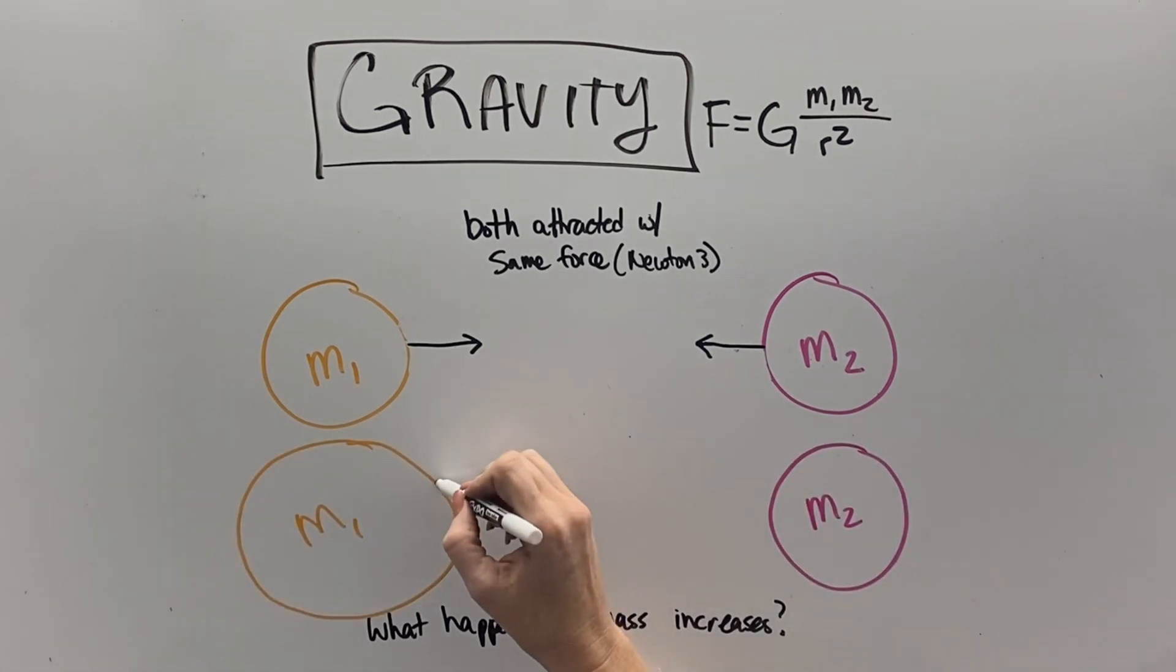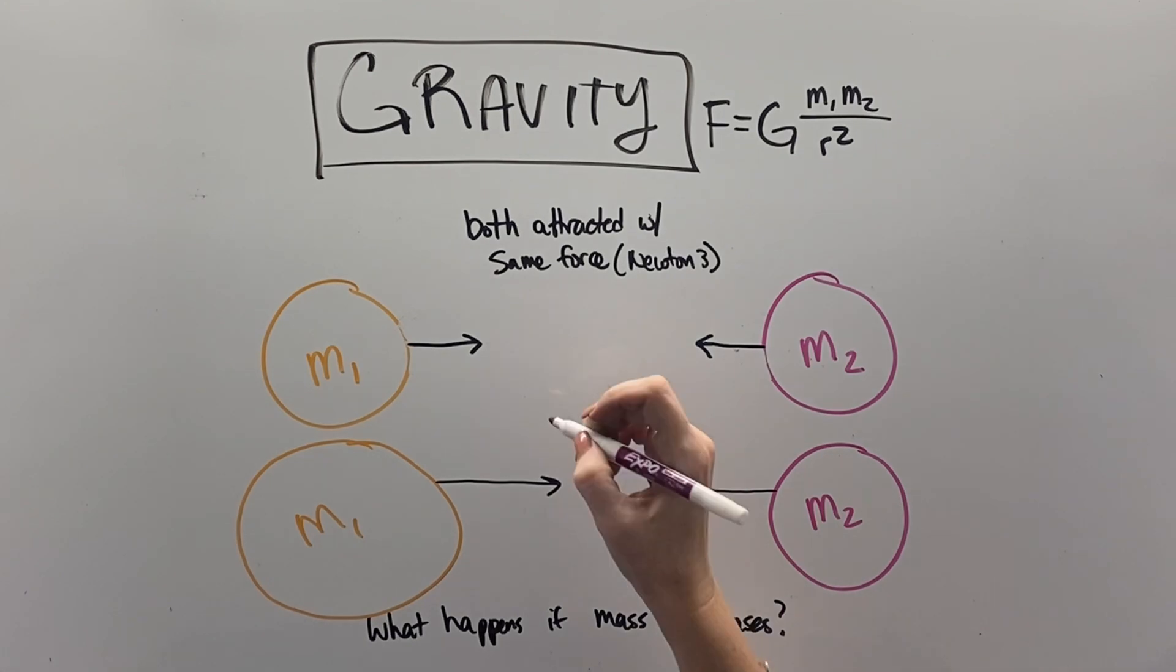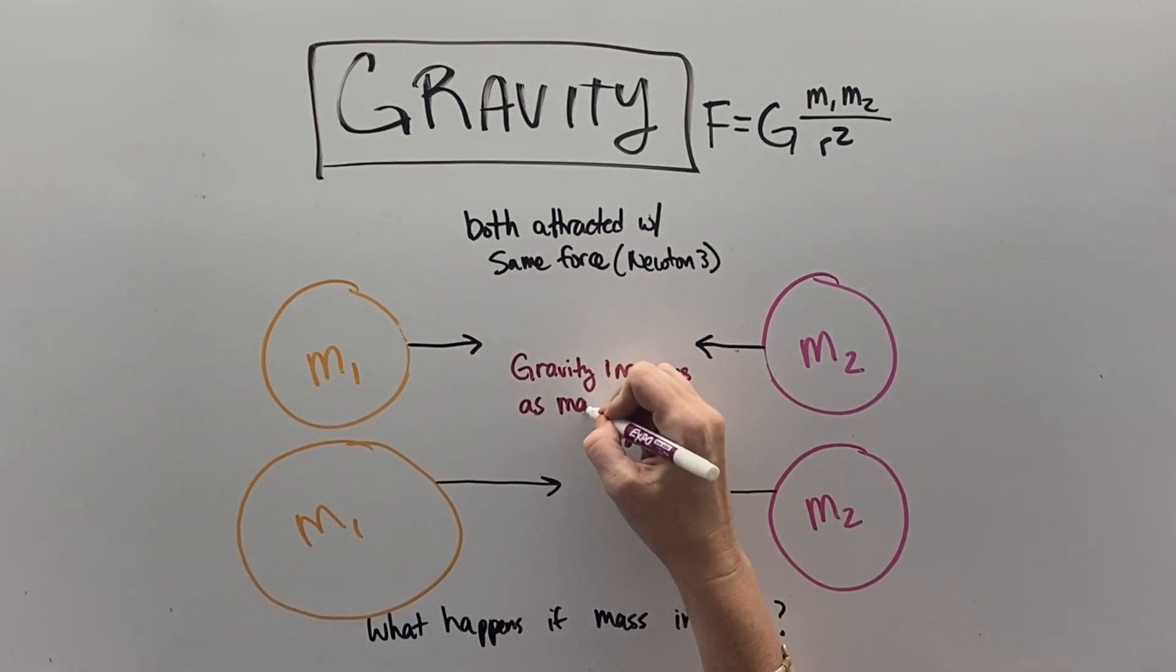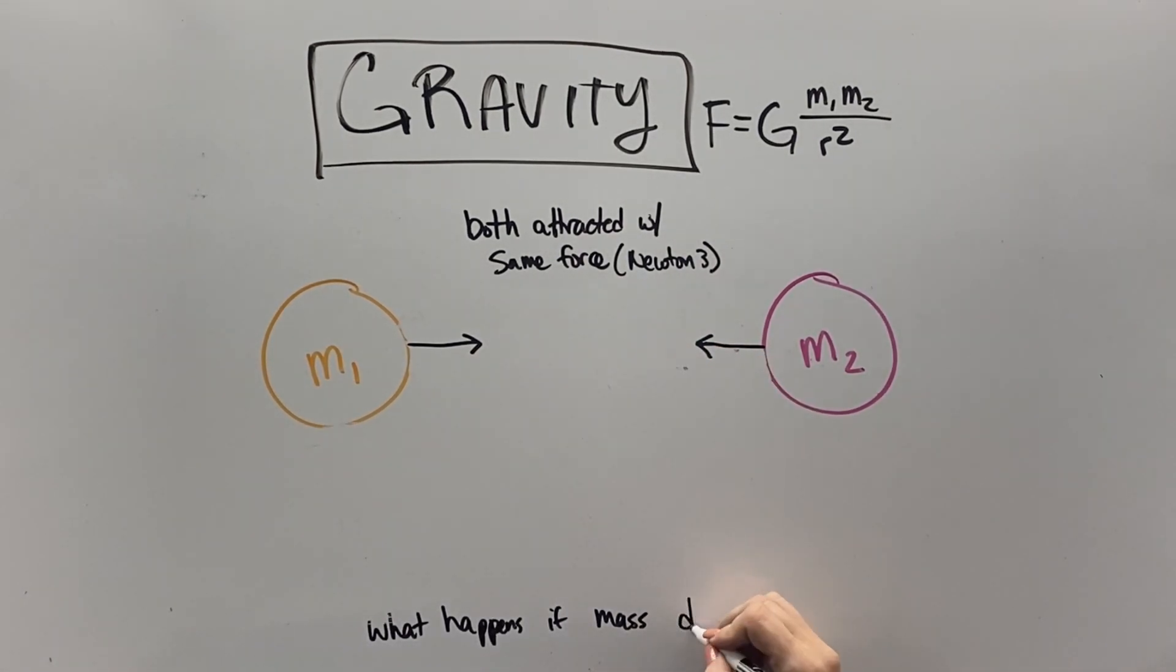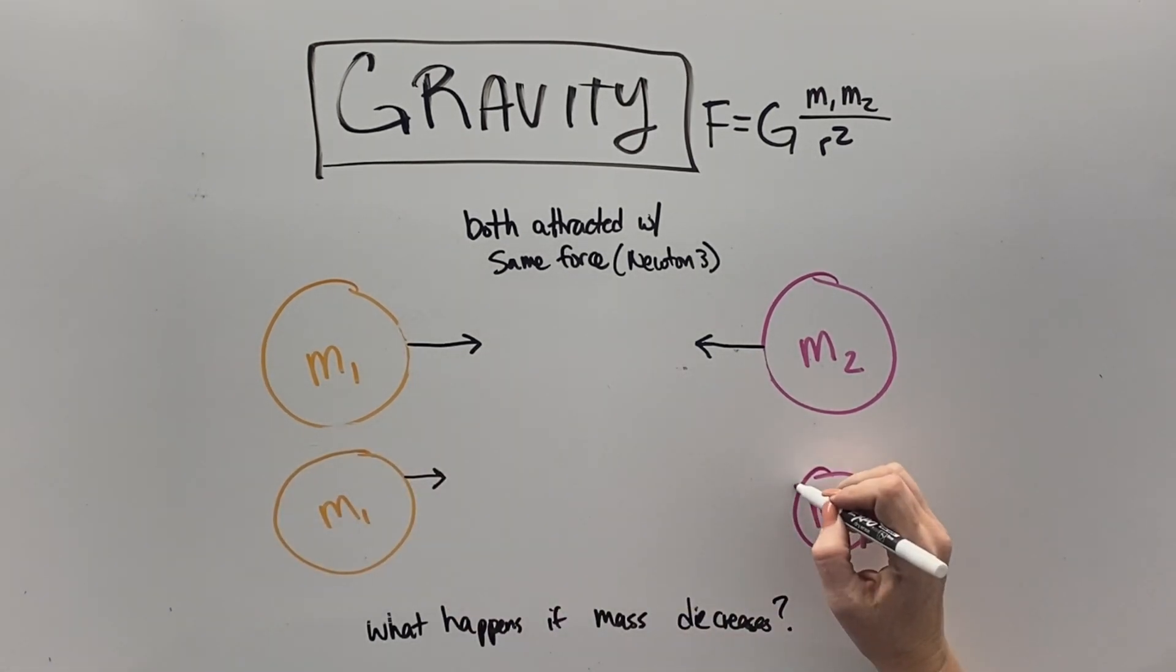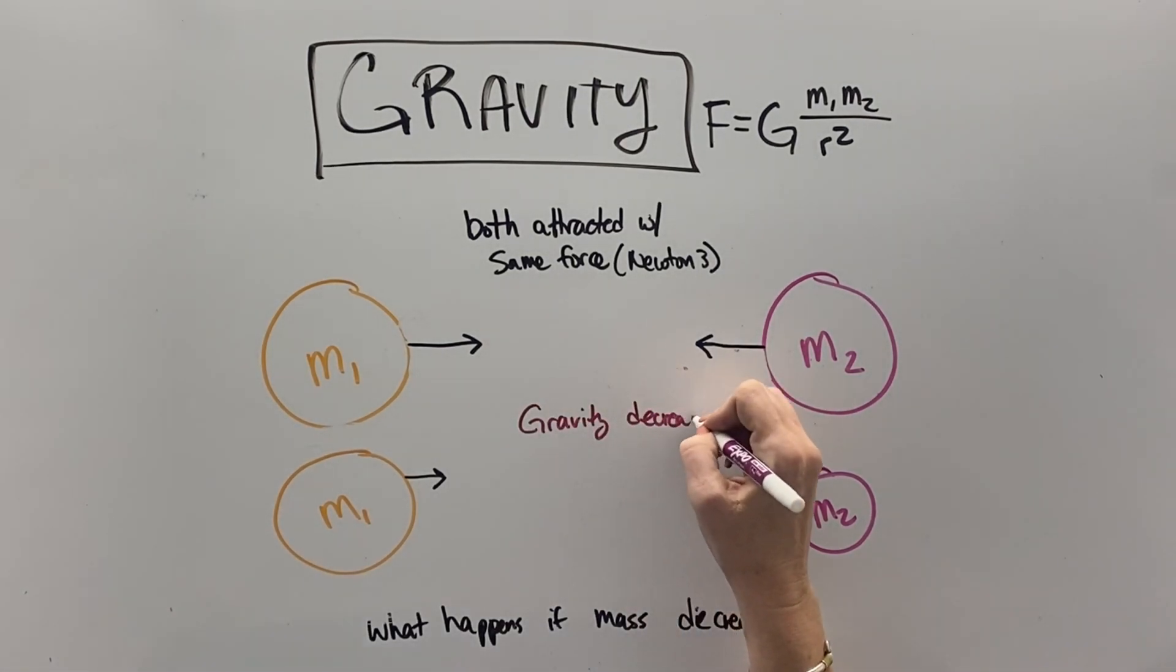If mass increases, if the objects get heavier, then gravity increases as well, the force of gravity. So, it's kind of like the bigger somebody is, the harder it is for them to jump off of the planet, because the Earth literally does pull on their mass more. And if mass decreases, then the gravitational force also decreases.